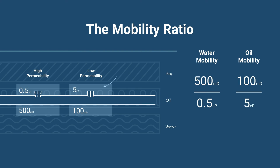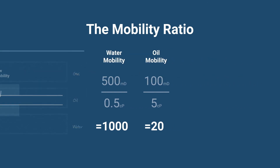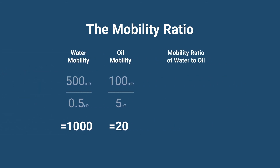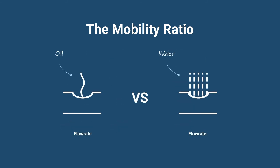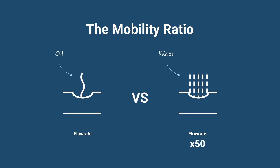A normal value for medium oil. If we calculate the fluids' individual mobilities, we see that the mobility ratio becomes 1000 divided by 20, which is a factor of 50. Meaning that in this example the flow rate will be 50 times larger for the water than that of the oil.